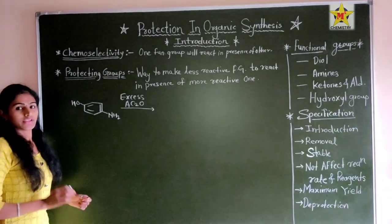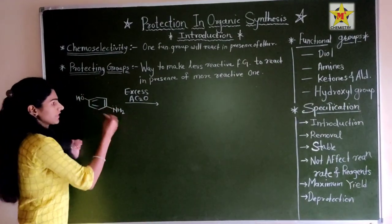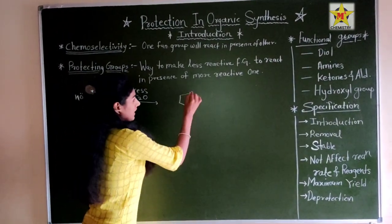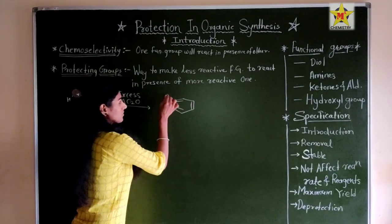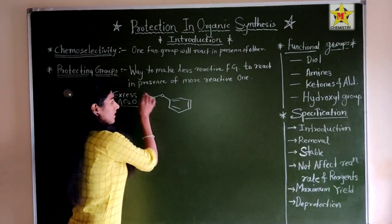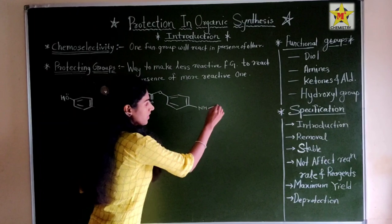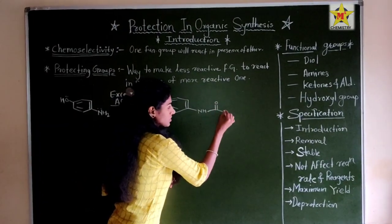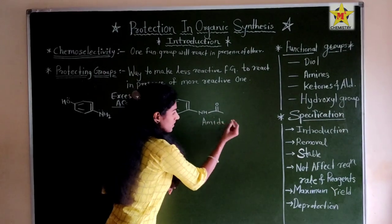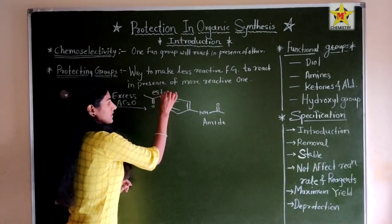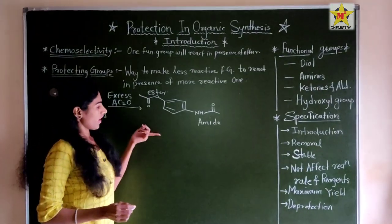What will happen? In this compound, both OH as well as NH₂ groups will react. OH will form an ester, and NH₂ will react and form an amide. So both amide and ester are formed. Here, no chemoselectivity is observed.